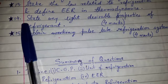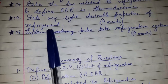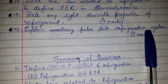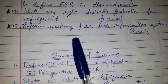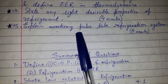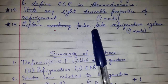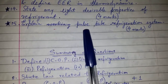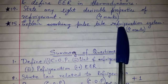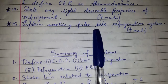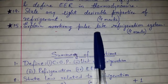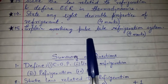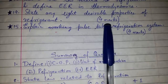Question thirteen: State any eight desirable properties of a refrigerant. Question fourteen: Explain the pulse tube refrigeration system. As mentioned, instead of vortex tube, pulse tube refrigeration may be asked — it has come up on an exam where vortex was not asked. So prepare vortex, pulse tube, and solar refrigeration so that you can answer whichever appears.